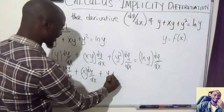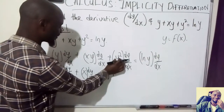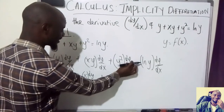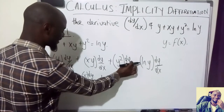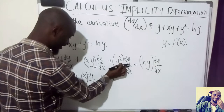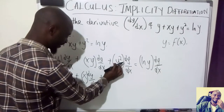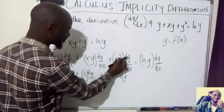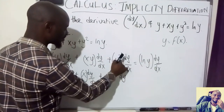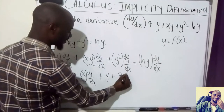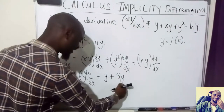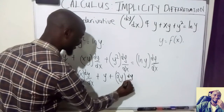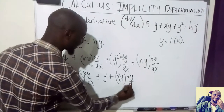Then for the y² term, I differentiate. Remember, this is y, so I will attach dy over dx. Differentiating y²: 2 multiplied by 1 gives 2, then y, and the power 2 reduces by 1 to give y to the power 1. Because I differentiated y, I have to attach dy over dx.